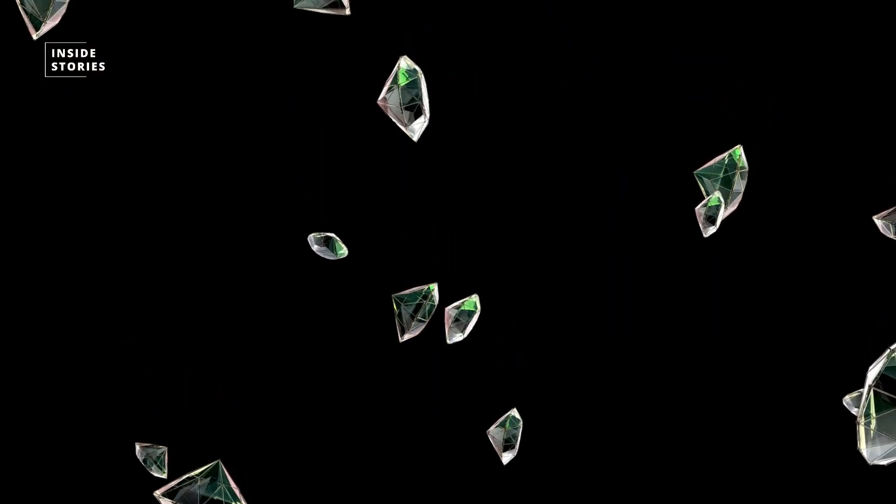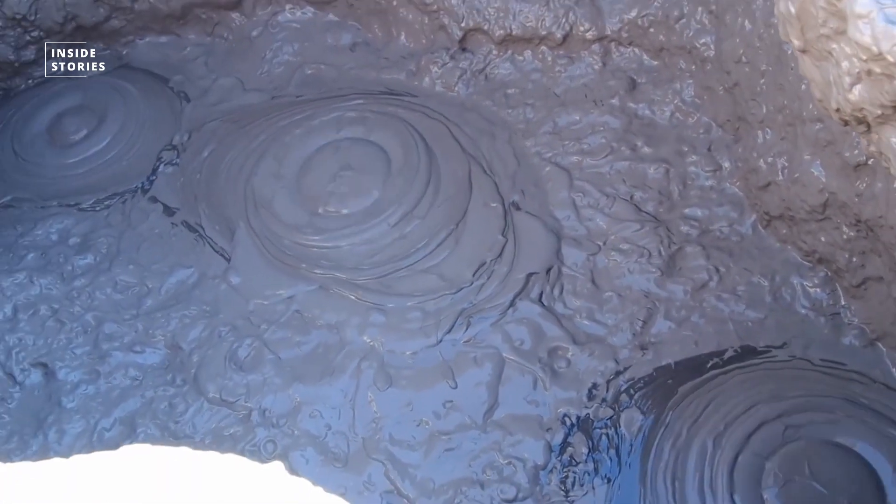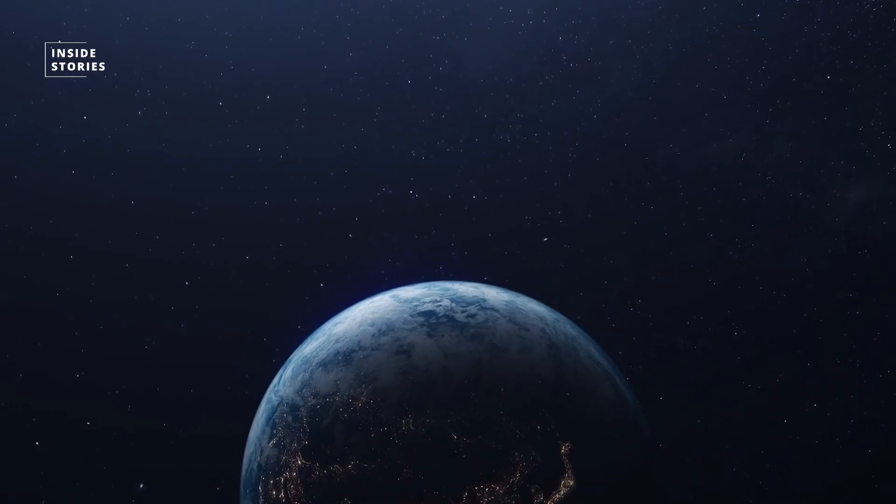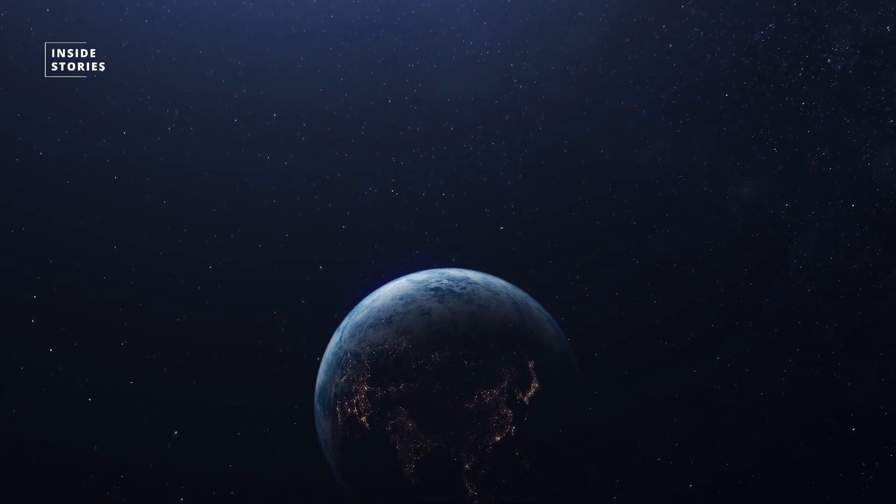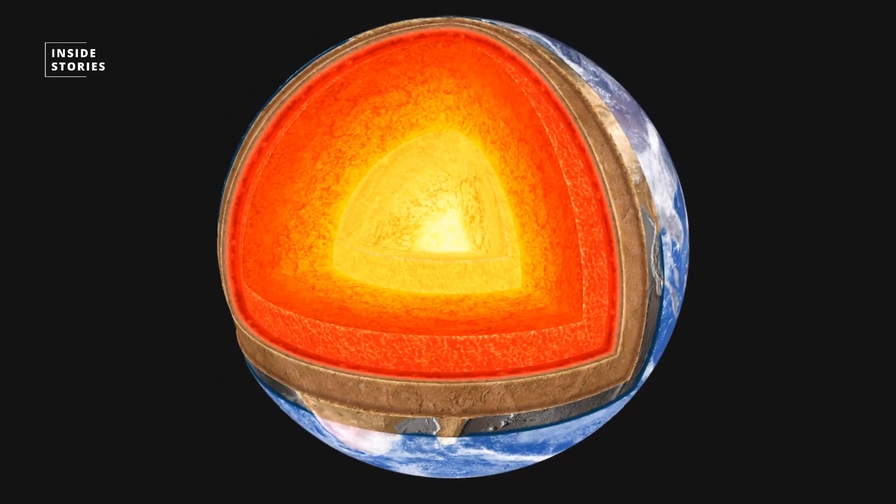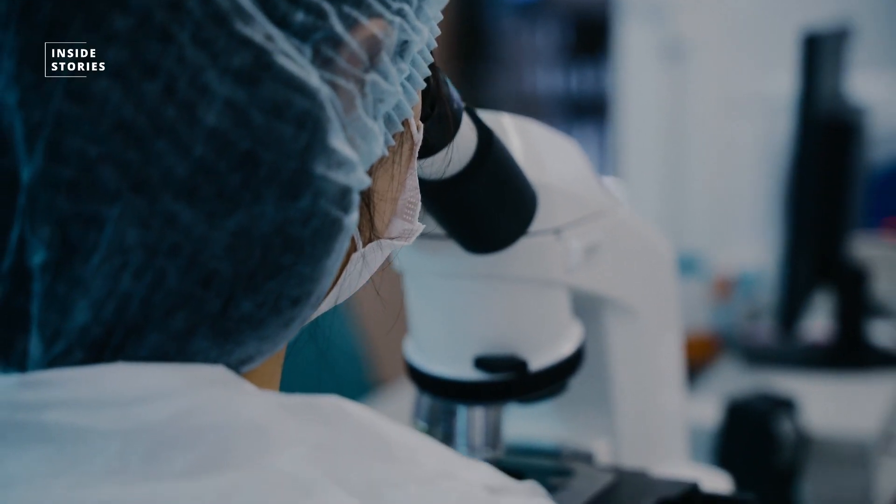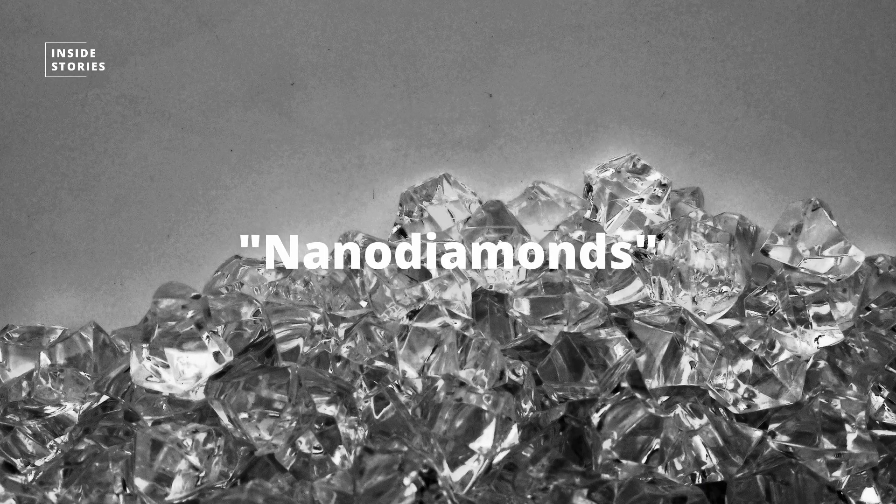Since the 1970s, scientists believed that diamonds could actually rain down toward the mushy, rocky interiors of the planets. In 2017, researchers in Germany and California found a way to replicate those planetary conditions, fabricating incredibly tiny diamonds called nanodiamonds in the lab using polystyrene.